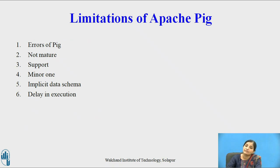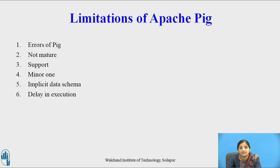Now let us see some of the limitations of Apache Pig. Pig's errors are not easily interpretable and solved. Apache Pig is not fully matured and does not support many other platforms. It has an implicit data schema, and there is a delay in execution because MapReduce jobs written in Pig Latin scripts execute slowly compared to MapReduce jobs written in Java.